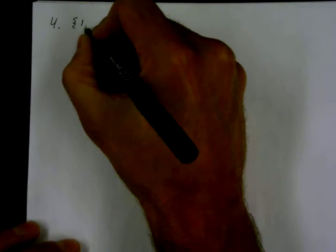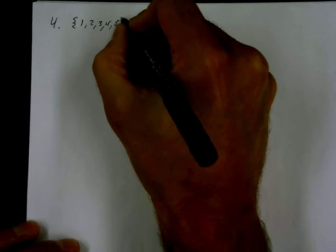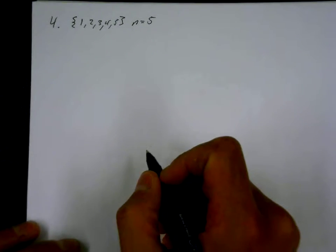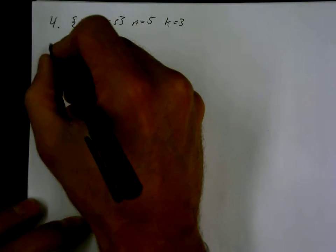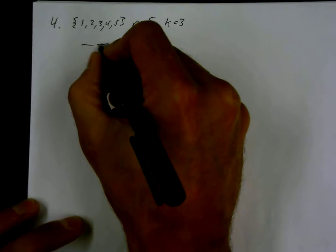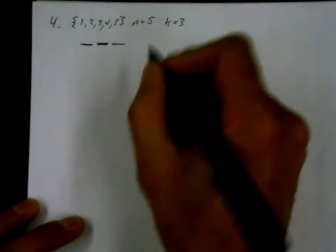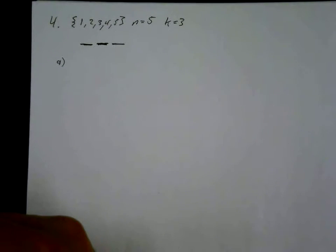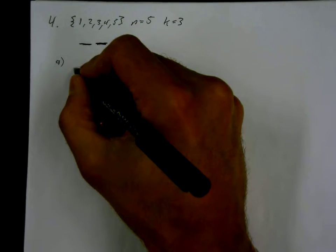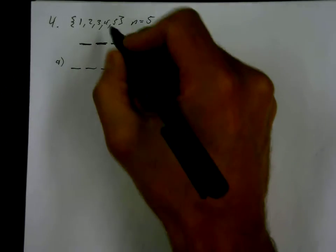Question four says: how many three-digit numbers can be made from the digits one to five? Our set is {1, 2, 3, 4, 5} and the cardinality n is equal to five — there are five elements. We're making three-digit numbers, so k is equal to three. I'm going to be using three seats. This is how I do numbers and arrangements: I drop them into seats. For part a, repetition of digits is not allowed. I drop my three seats because I want to arrange three of these numbers — think of them like foam numbers from when you were a kid, all in a bag.